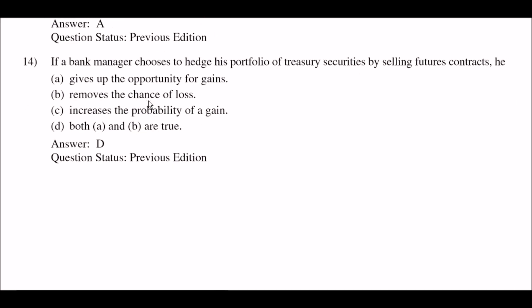Next question: if a bank manager chooses to hedge his portfolio of treasury securities by selling futures contracts, he — option A: gives up the opportunity for gains; option B: removes the chance of loss; option C: increases the probability of gain; option D: both A and B are true. The right answer is option D: both A and B are true.